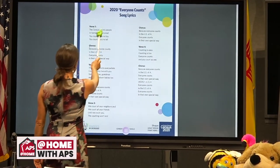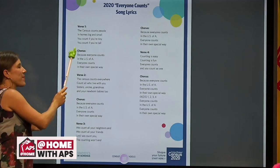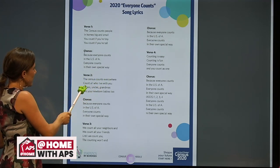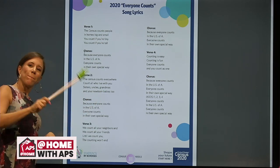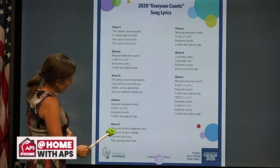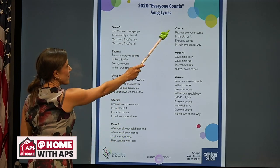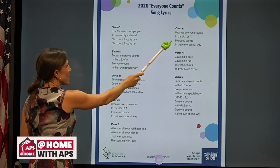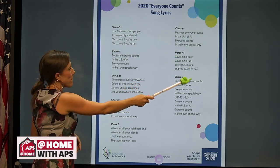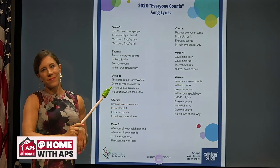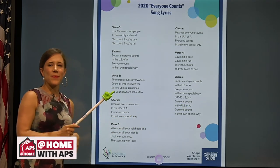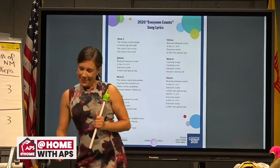The census counts people in homes big and small. You count if you're tiny, you count if you're tall. Because everyone counts in the U.S. of A., everyone counts in their own special way. You count too. The census counts everywhere — count all who live with you: sisters, uncles, grandmas, and your newborn babies too. We count all your neighbors and we count all your friends. Everyone counts in the U.S. of A., everyone counts in their own special way. Counting is easy, counting is fun. Everyone counts and you count as one.